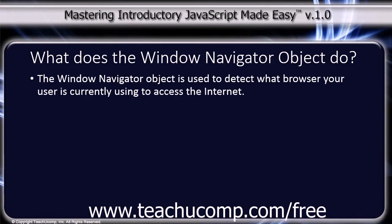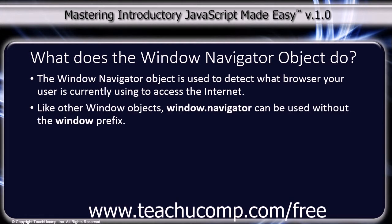The Window Navigator object is used to detect what browser your user is currently using to access the internet. Like other Window objects, Window.Navigator can be used without the Window prefix.